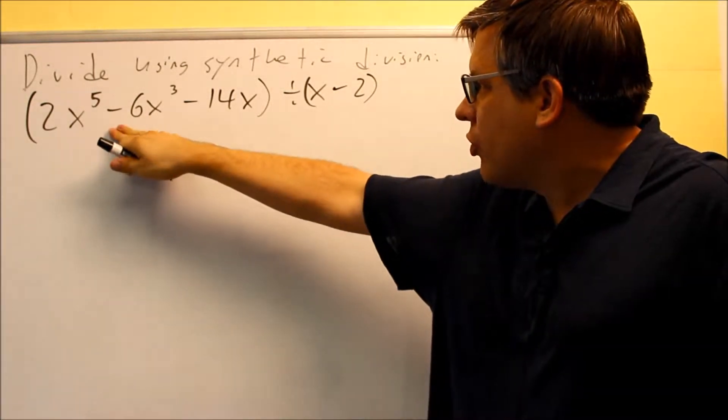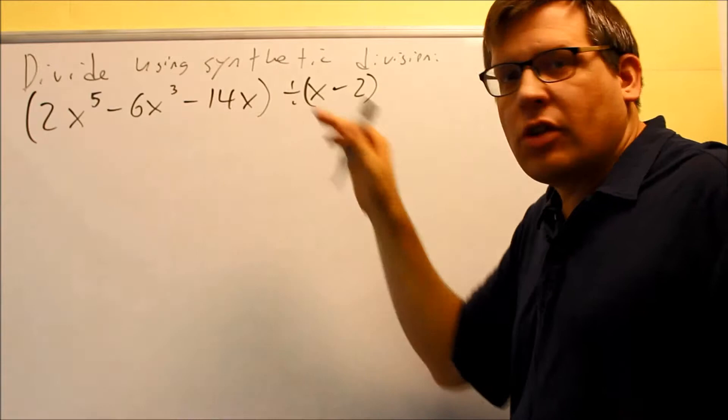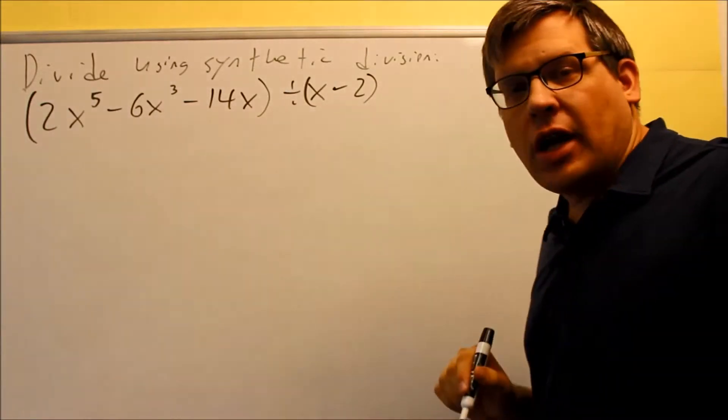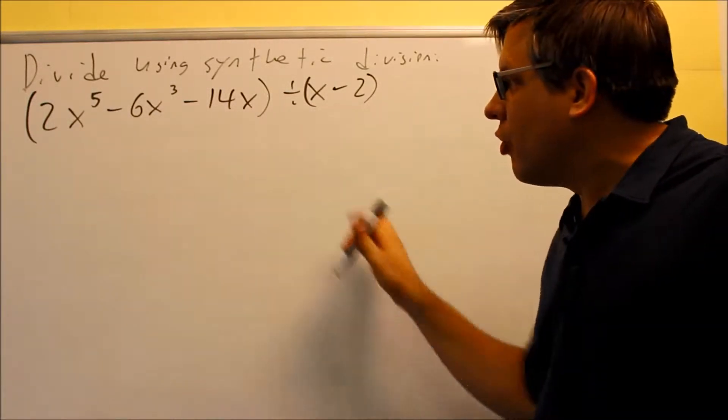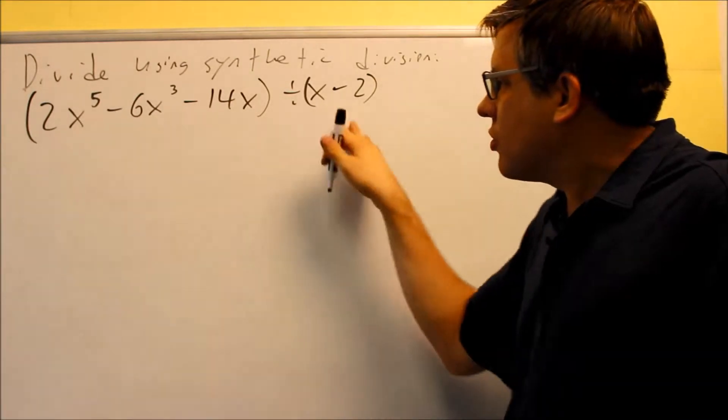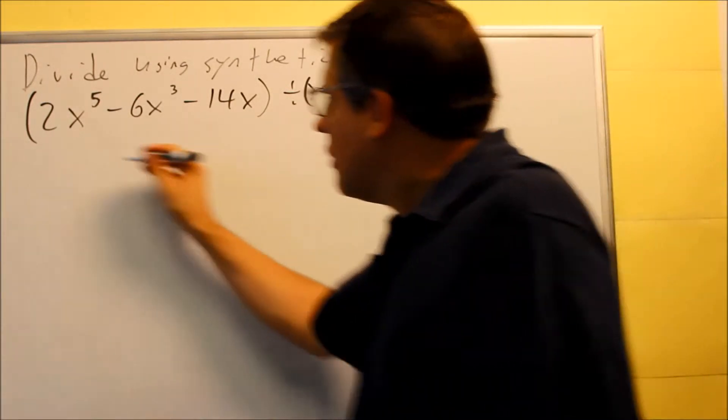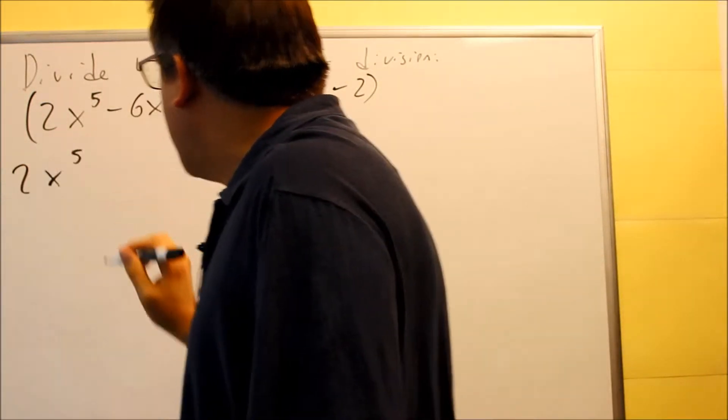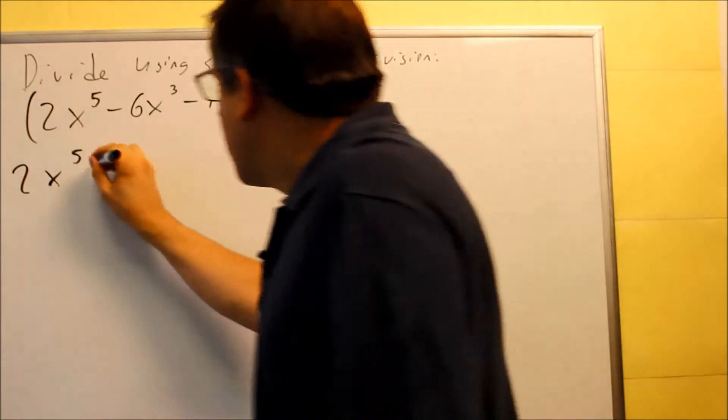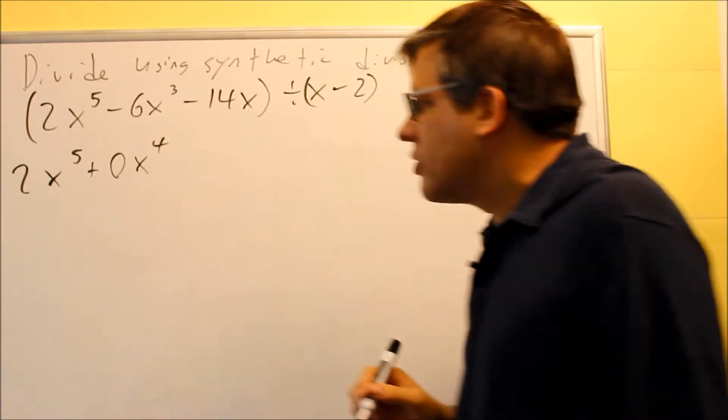We don't have the fourth term, the square term, or the number on the end. All those are going to have to be replaced with zeros. So before we do the setup, we always want to make sure that this is set up properly. I have 2x to the fifth, and whenever you have a term missing, you want to put in a 0 placekeeper for that one.